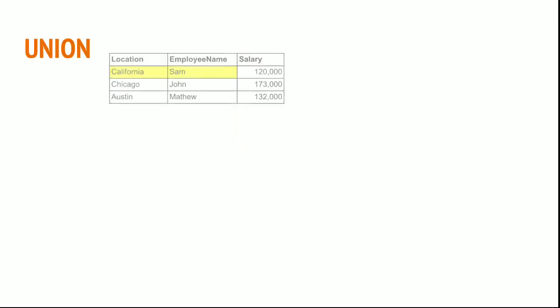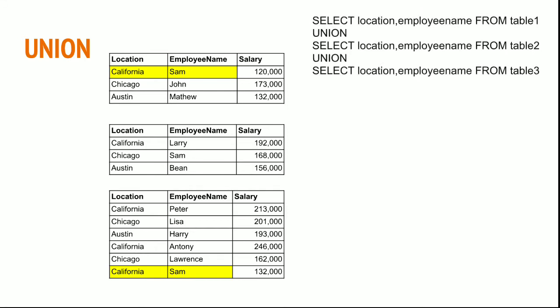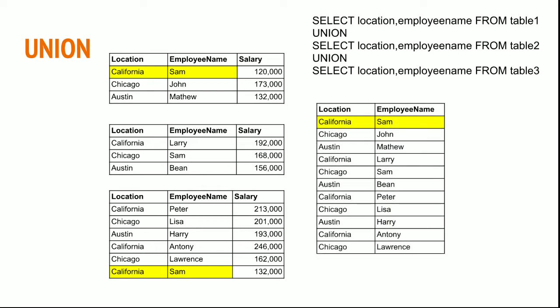Union. If I have data in table 1, 2, and 3, I can append data in all these three tables using the keyword UNION between select statements. The query selecting location and employee name from table 1, union table 2 and table 3 will return data from all three tables. If you notice, the employee California Sam is written only once even though it appears twice — in table 1 and table 3 — because UNION checks for duplicates, eliminates them, and returns only unique values.